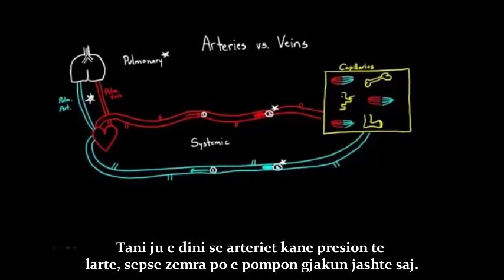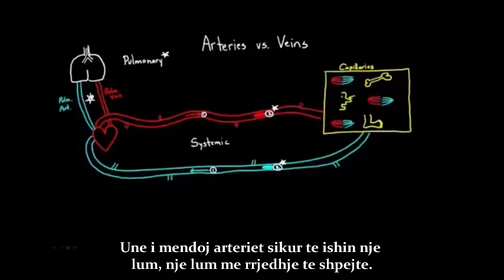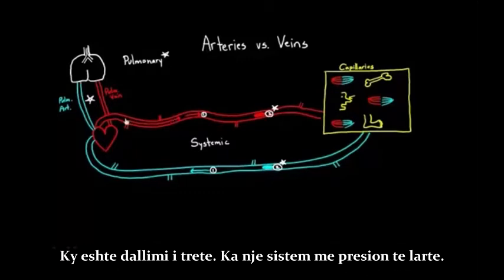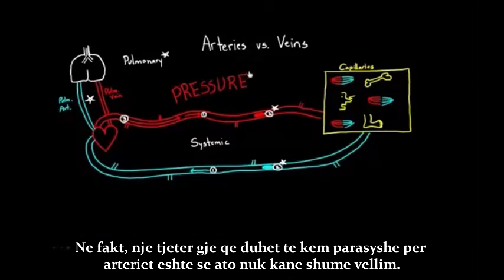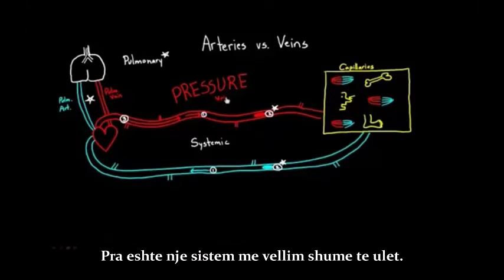Arteries are a high-pressure system because the heart is pumping the blood out under very high pressure. I think of arteries as being like a fast-flowing river — high pressure. That is the third difference. And another thing we associate with arteries is that there's not much volume in them. If you froze time and tried to figure out where all the blood was located, not too much of it would be in the arteries — it's actually a very low-volume system.